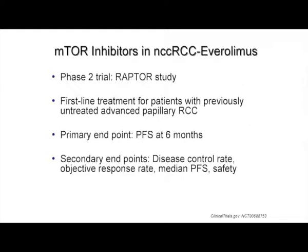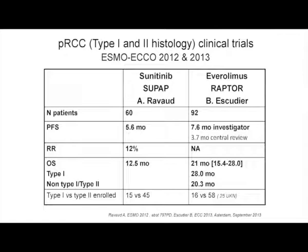Ellen Rini presented the results of the SUPAP trial at the ESMO meeting in 2012, and Bernard presented the results in 2013 at the ASCO meeting. They got together quite a lot of patients — 60 in the SUPAP trial and 92 in the everolimus trial. In the SUPAP trial, there was a 5.6-month PFS and overall survival of 12.5 months. In the everolimus trial, the investigators found 7.6 months progression-free survival, but central review found only 3.7 months. The overall survival of 21 months is important. Both of these drugs do have activity in papillary carcinoma, though the problem remains of mixing papillary type 1 and 2 — completely different diseases — in all of these trials.